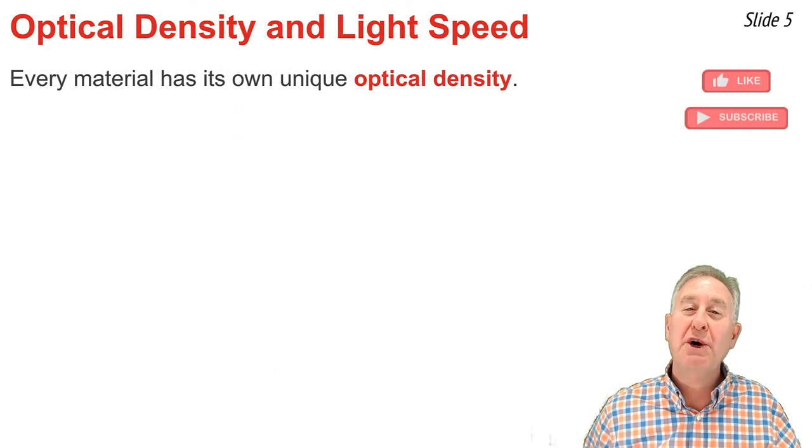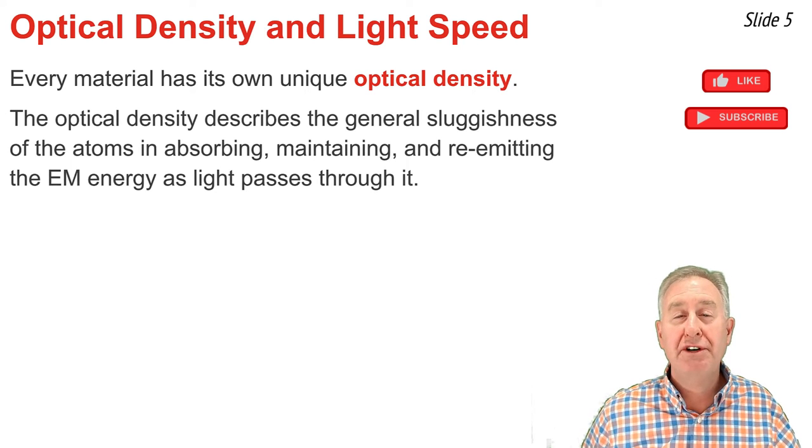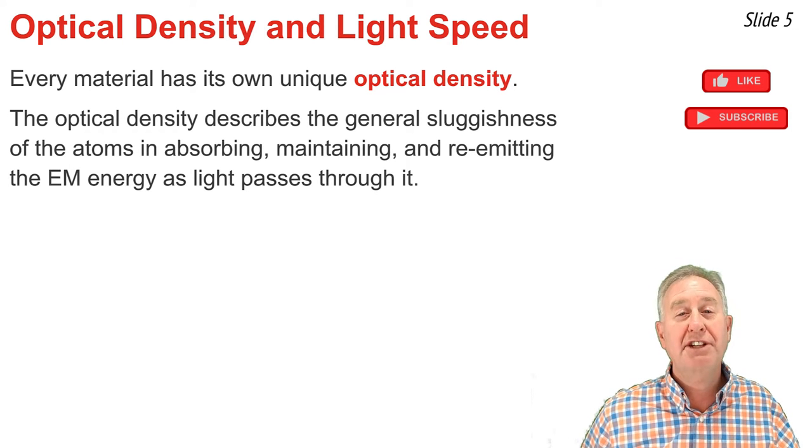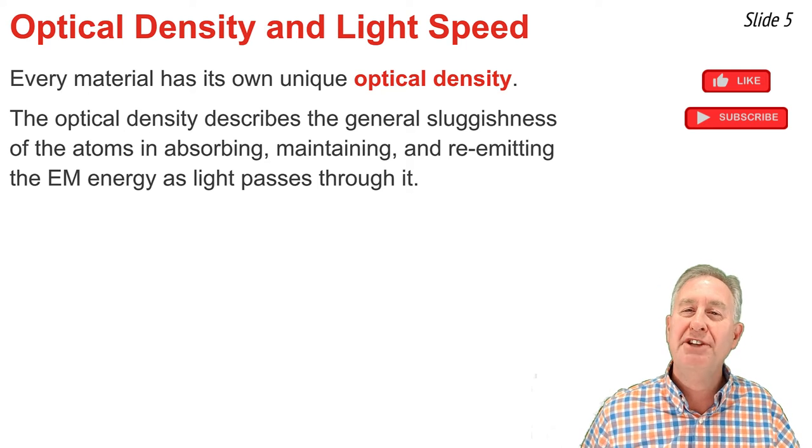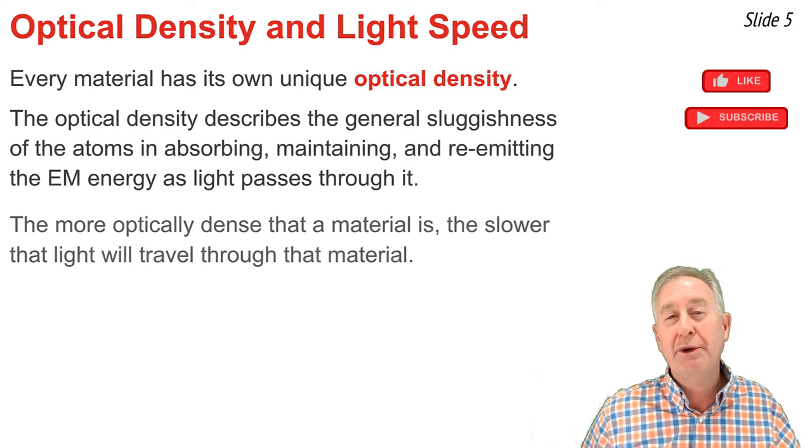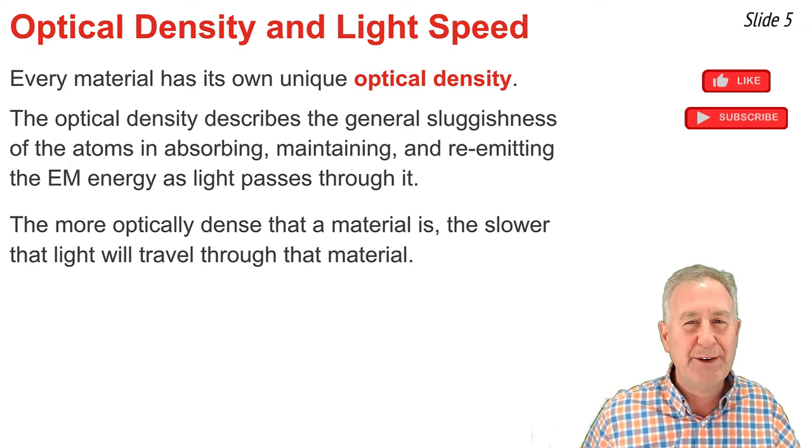Every material has its own unique optical density. Optical density refers to the general sluggishness of the atoms of that material as it absorbs, maintains, and re-emits the electromagnetic energy as the light wave passes through it. The greater the optical density of a material, the slower light will travel through that material.